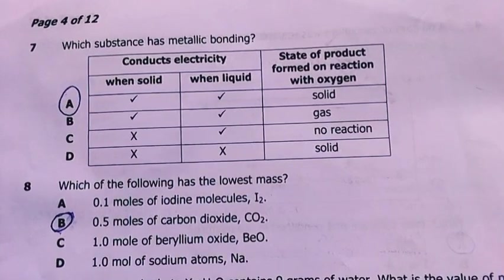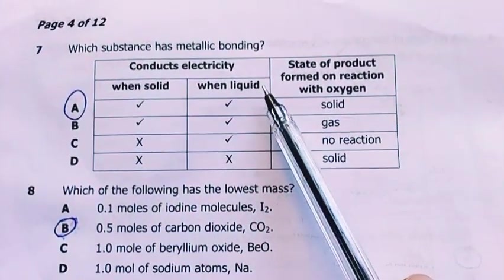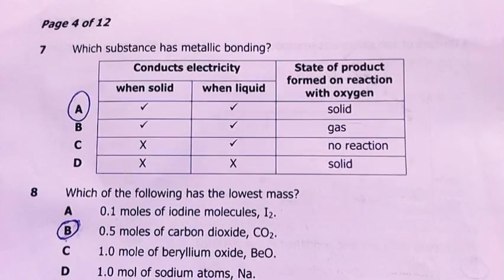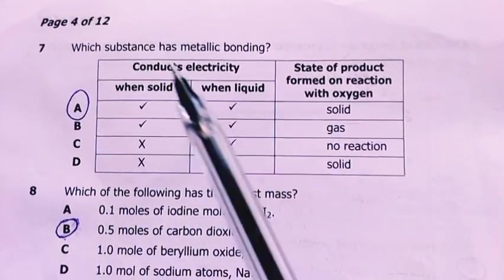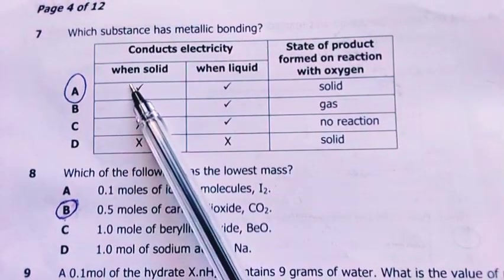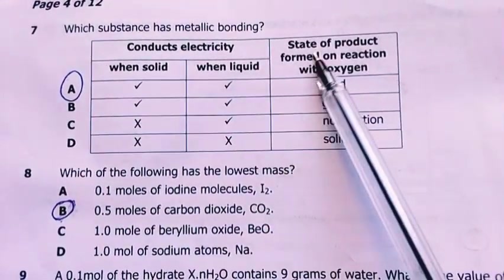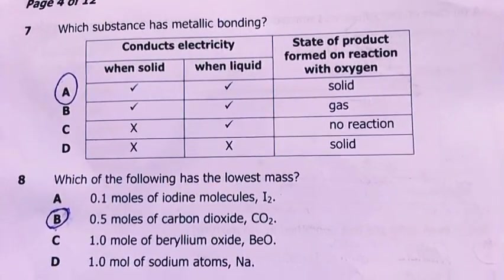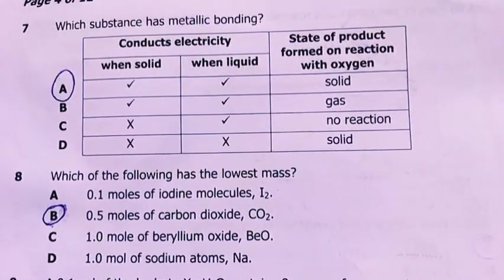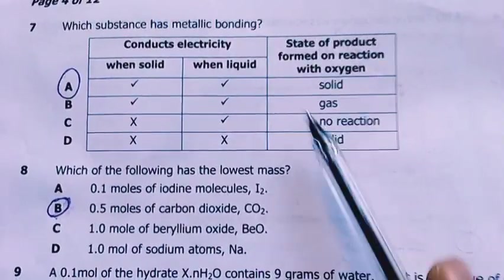Question seven, which substance has metallic bonding? My answer is A. Because if it has metallic bonding, it's a metal. Metals conduct electricity in solid state and even in their molten state. When they react with oxygen, they form oxides which are usually powders of different colors. For iron it appears reddish, which is rust. For group 1 and group 2 elements, it may appear white and gray of different degrees depending on the metal, but it cannot be a gas. My answer is A.